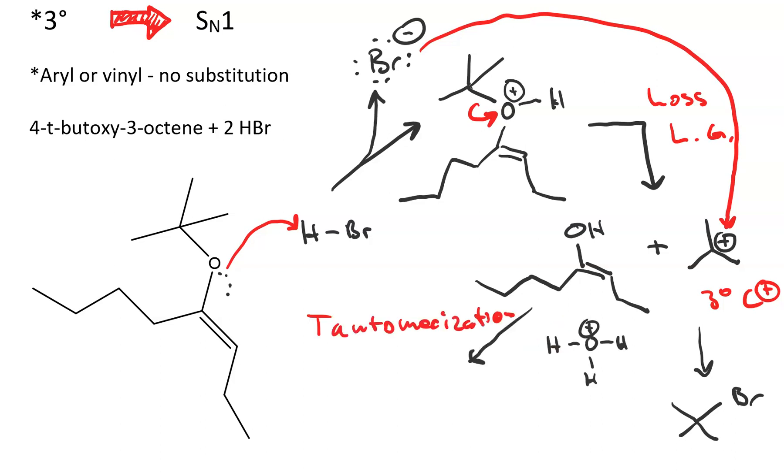The enol is also going to undergo acid catalyzed tautomerization where the pi bond acts as a base and takes a proton. Since we're in acid there should be plenty of hydronium around to act as a proton donor, and of course the more stable tertiary carbocation is formed.